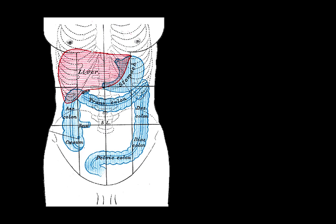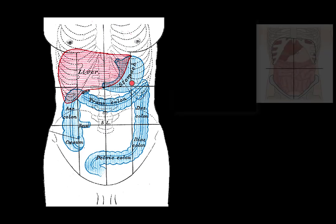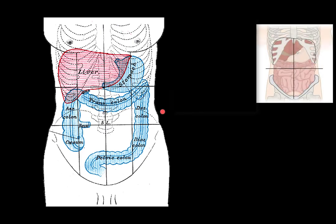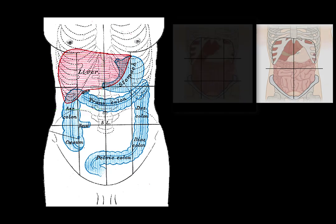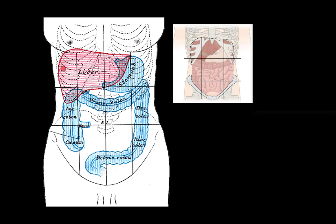The liver is located in the right upper quadrant of the abdomen. If you divide the abdomen into four quadrants, and if the abdomen is divided into nine regions, then the liver occupies most of the right hypochondrium and extends into the epigastrium and sometimes even a little bit into the left hypochondrium.